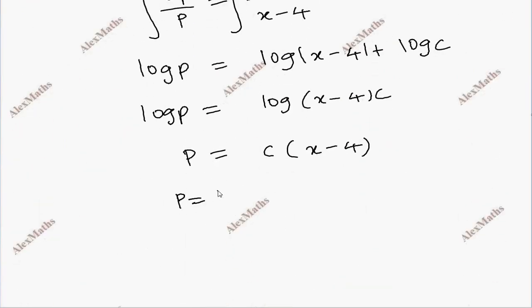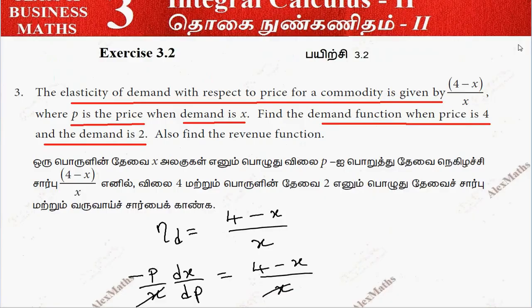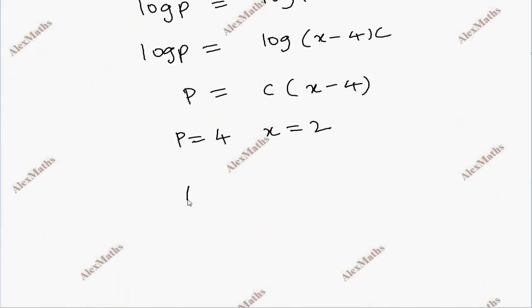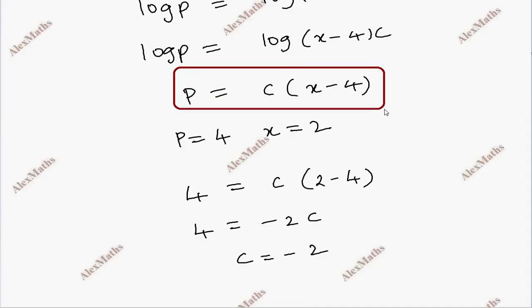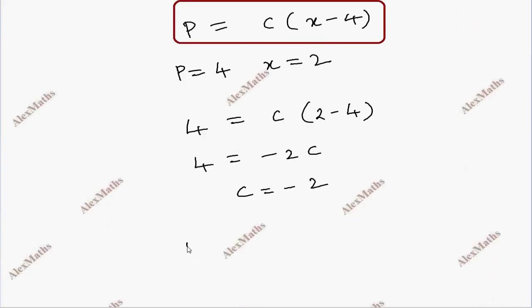Now substituting the given values: p equals 4 and x equals 2. So 4 equals c times (2 minus 4), which gives 4 equals minus 2c. Therefore c equals minus 2. Hence, p equals minus 2 times (x minus 4).